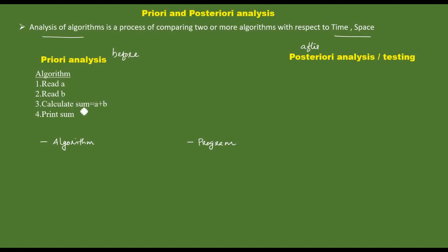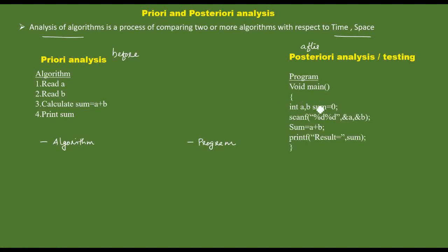We convert the program — for example, a C language version — and run the algorithm to measure exact time and space. Suppose the algorithm runs for 4 microseconds on a machine. That exact value in time and space is the posteriori analysis.